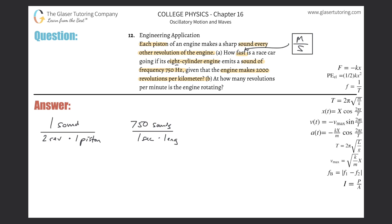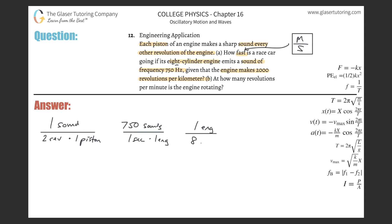It's an eight-cylinder engine — and each cylinder has a piston — so to stay consistent I'll write: per single engine there are eight pistons. Finally, the engine makes 2,000 revolutions per kilometer, so the last piece is: 2,000 revolutions per single kilometer.